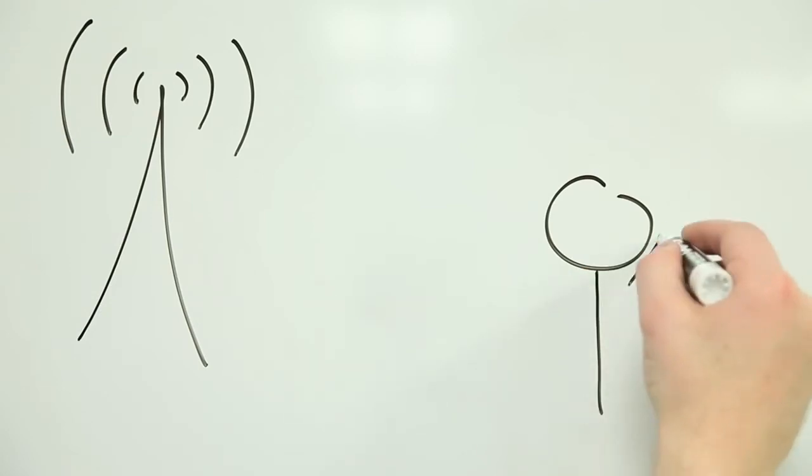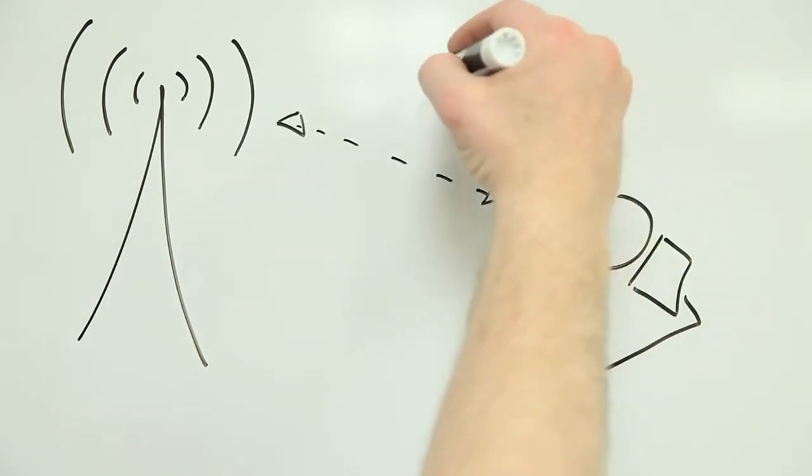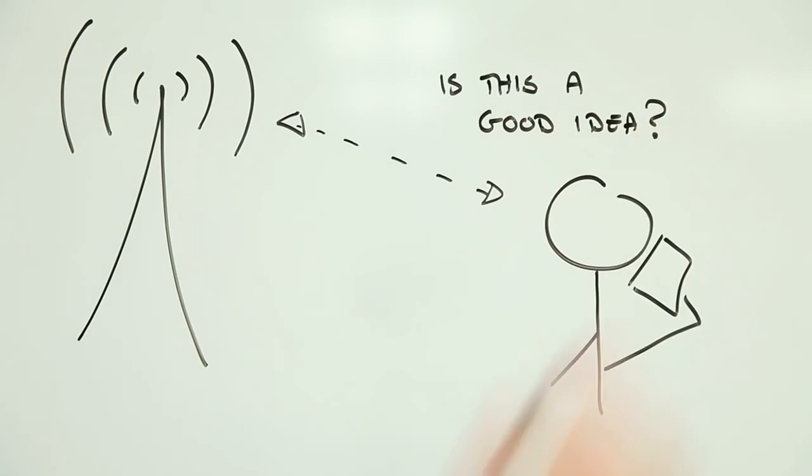What makes cell phones different from other wireless appliances is that we have a habit of holding them next to our heads. So it's perhaps not surprising that researchers have asked if there's any risk associated with extended exposure to cell phone radiation. To put it bluntly, they want to know, can cell phones give you brain cancer?